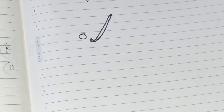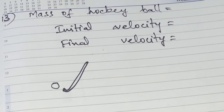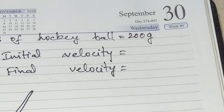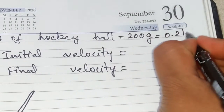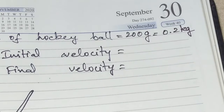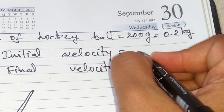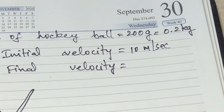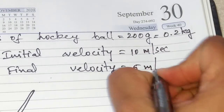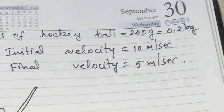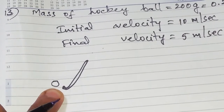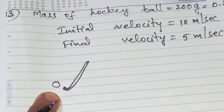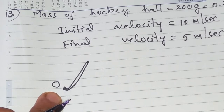The mass of the hockey ball is given in CGS units as 200 grams. Converting to MKS units: 200 divided by 1000 gives 0.2 kilograms. The initial velocity is 10 meters per second. The final velocity is 5 meters per second — velocity is reducing. Since mass is constant, momentum will also reduce.